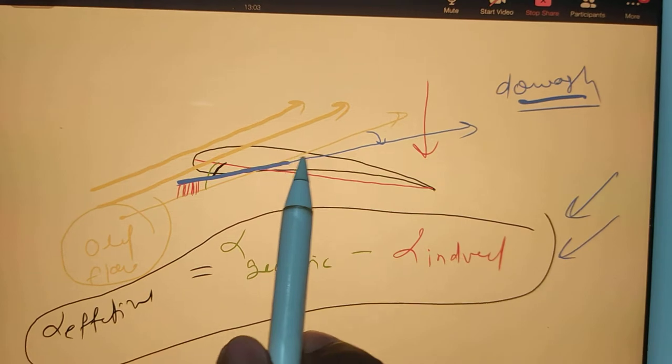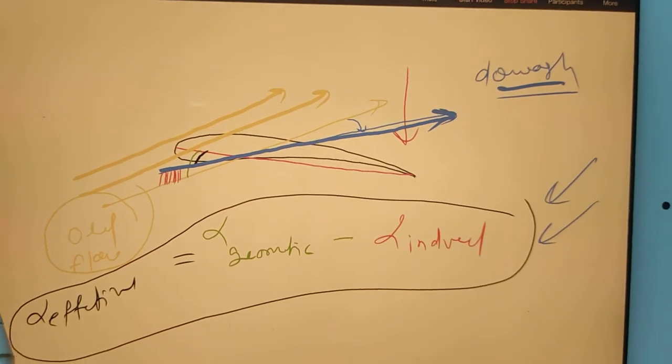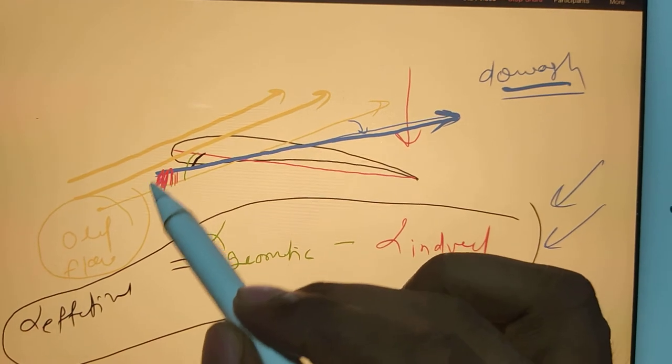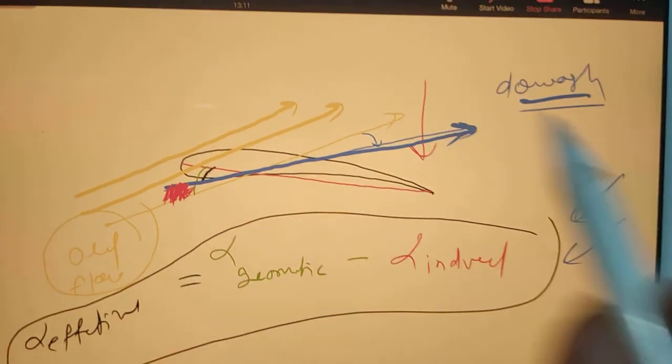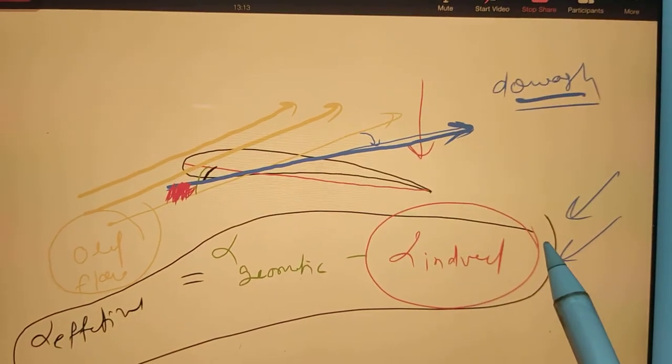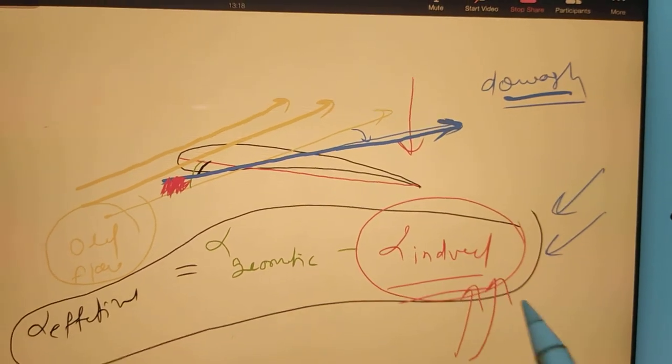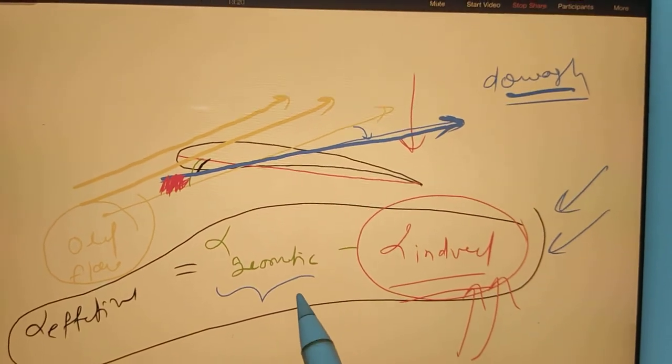and it will be the blue line, like you can see. So that's how much shifting is there - you can see the red angle. How much shifting is there, that is alpha induced, and that will always decrease. Because alpha induced will come, the total alpha geometric